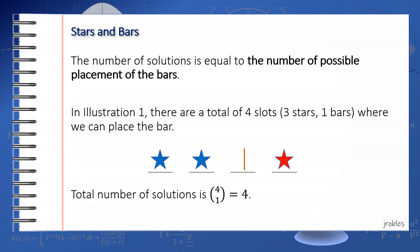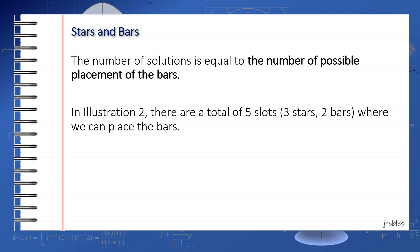By similar reasoning, in the second illustration, we can place the bars in 5 slots: 3 from the stars and 2 from the bars. The total number of placements of the bars is equal to C(5,2), which is 10, which is aligned to what we got earlier.